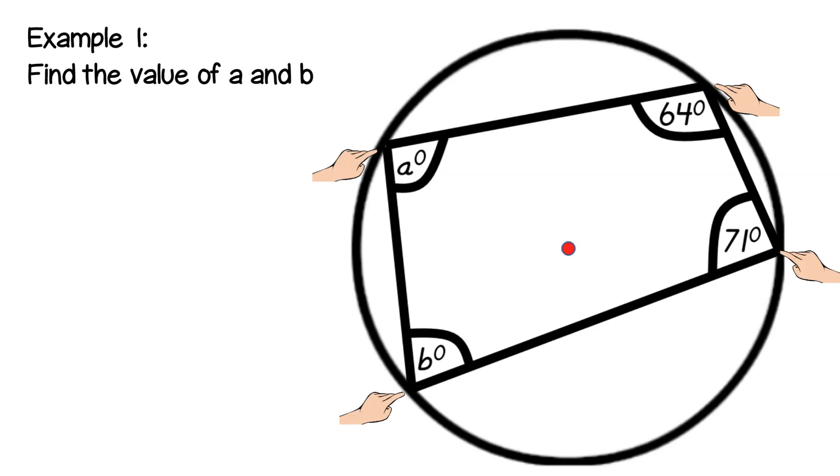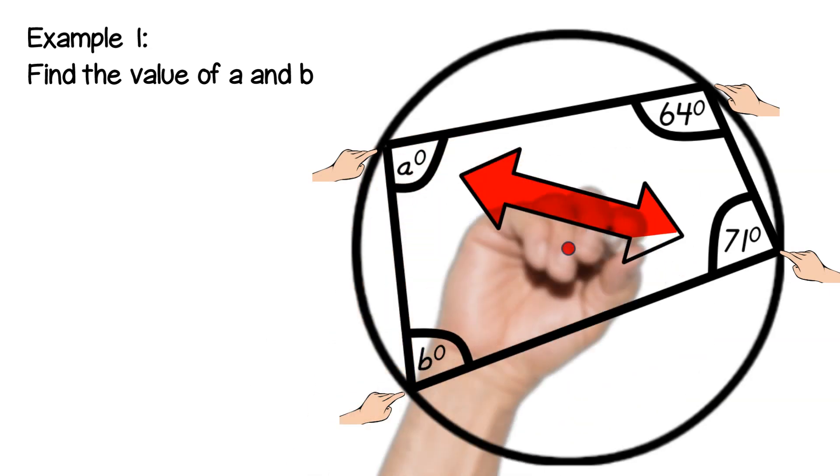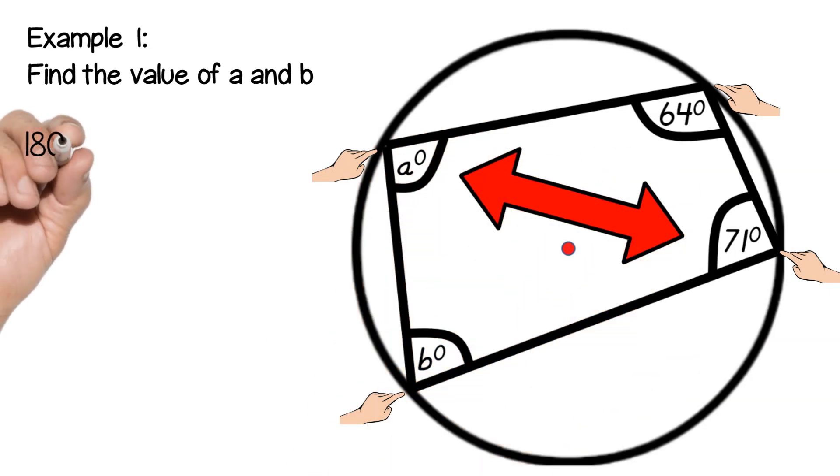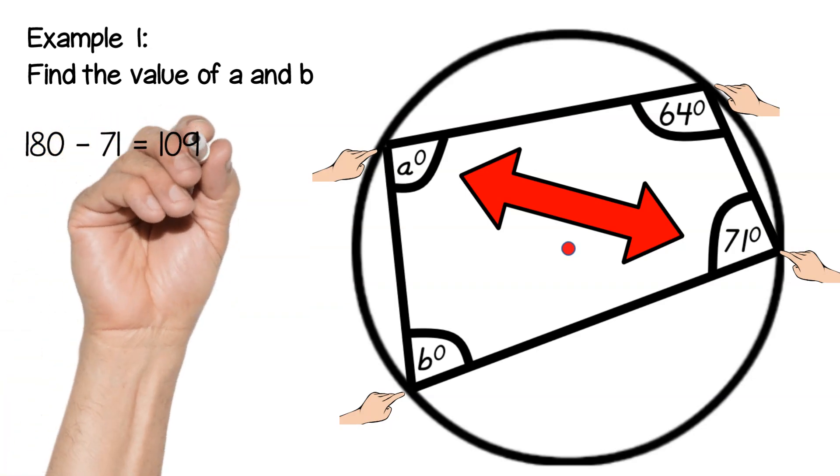So let's look at our first pair a and 71. These two add to 180 so I'm just going to calculate 180 minus 71 to give me 109 degrees.